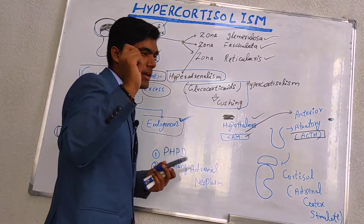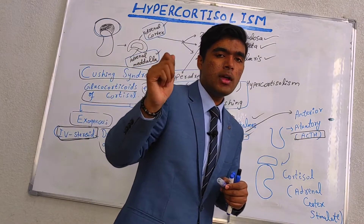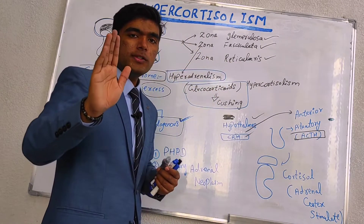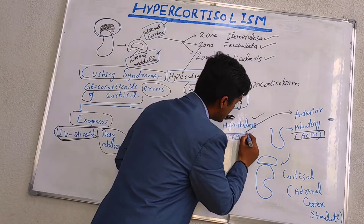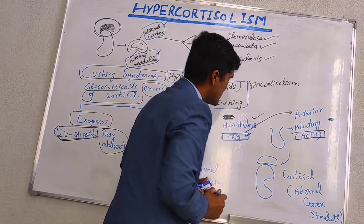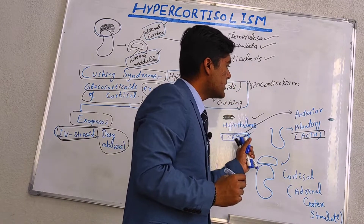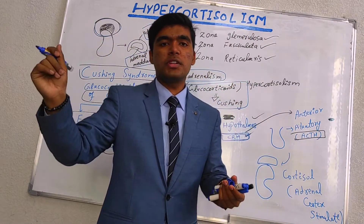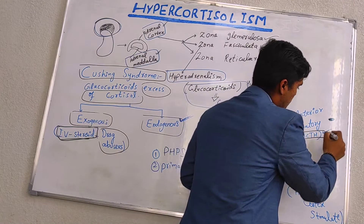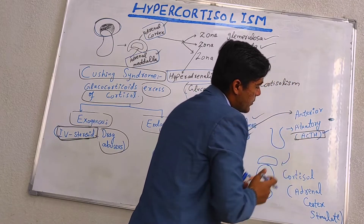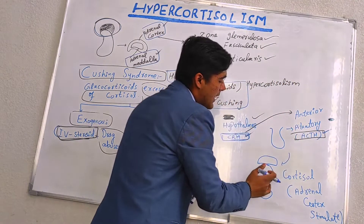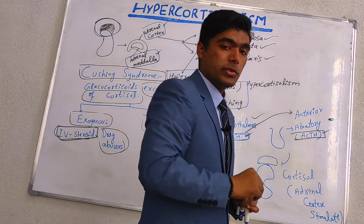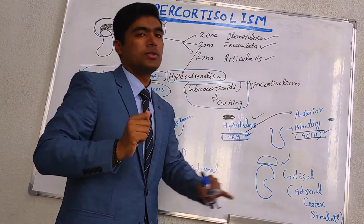When talking about endogenous factors, we need to discuss the mechanism of cortisol secretion. The hypothalamus releases corticotropin-releasing hormone (CRH), which goes to the anterior pituitary. The anterior pituitary then releases ACTH (adrenocorticotrophic hormone), which stimulates the adrenal cortex to release cortisol. This is the basic mechanism of cortisol secretion.